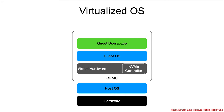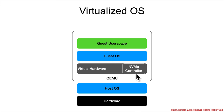In contrast, in a virtualized operating system, you have the guest user space, the guest operating system, and then virtual hardware — which is to say software pretending to be hardware. In this case, it is QEMU's software, and we're specifically going to focus on its implementation of an NVMe controller: virtual hardware, a process pretending to be an NVMe controller.